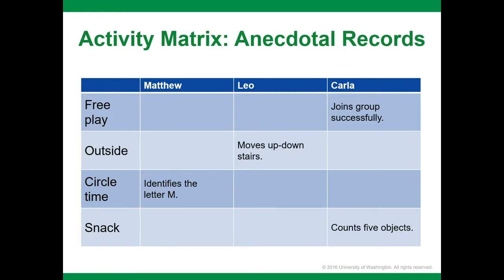This classroom activity matrix can help the teaching team plan who and what to observe. The names of the children being observed are written across the top of the matrix, and the classroom schedule of activities is written down the side. Each individual's objective is written in a space that tells the teaching team when to observe. They can then write anecdotal notes on the matrix — perhaps on post-it notes — and transfer the information into a child's portfolio or their classroom's assessment system.